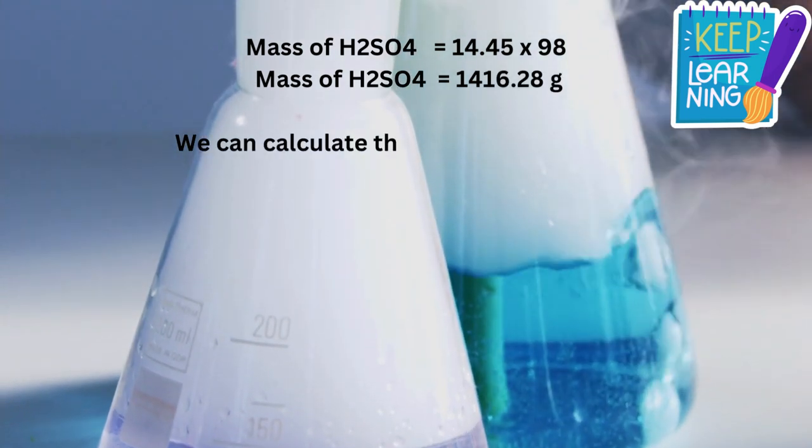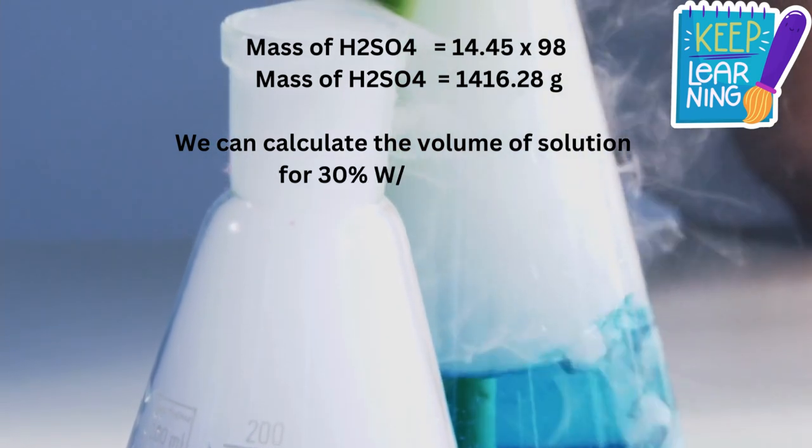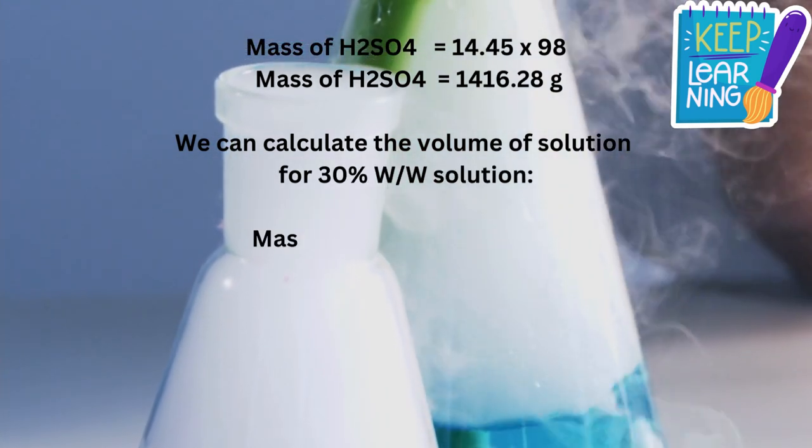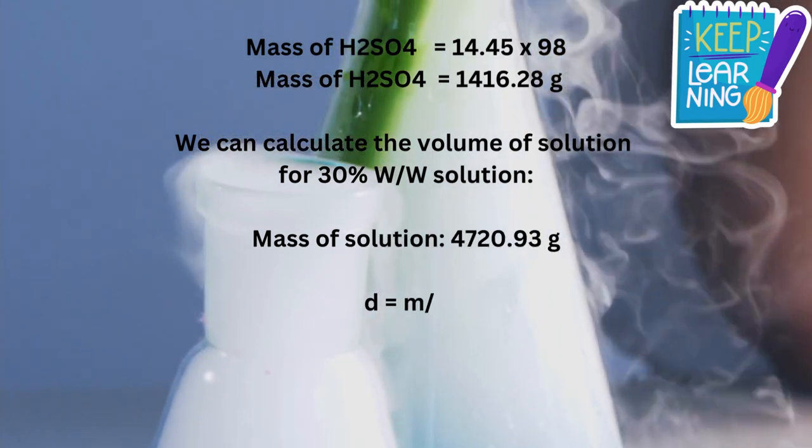We can calculate the volume of solution for 30% weight by weight solution. Mass of solution equals 1416.28 divided by 30% equals 4720.93 grams.